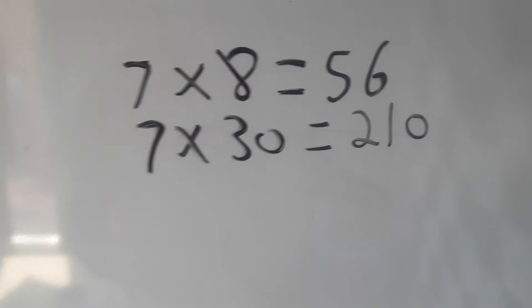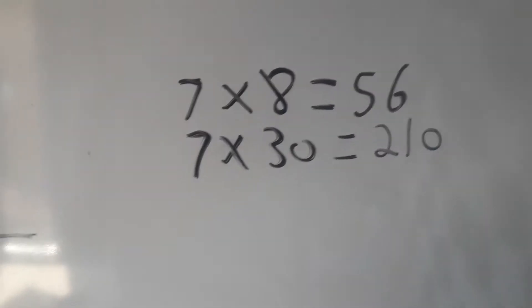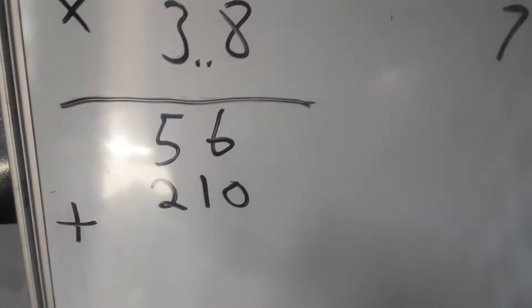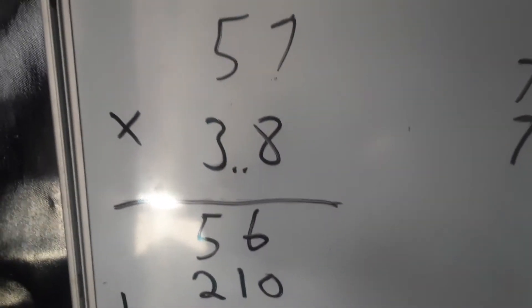210, right. 30 times 7 is 210. After having done that, we write 210 and then we'll say now...